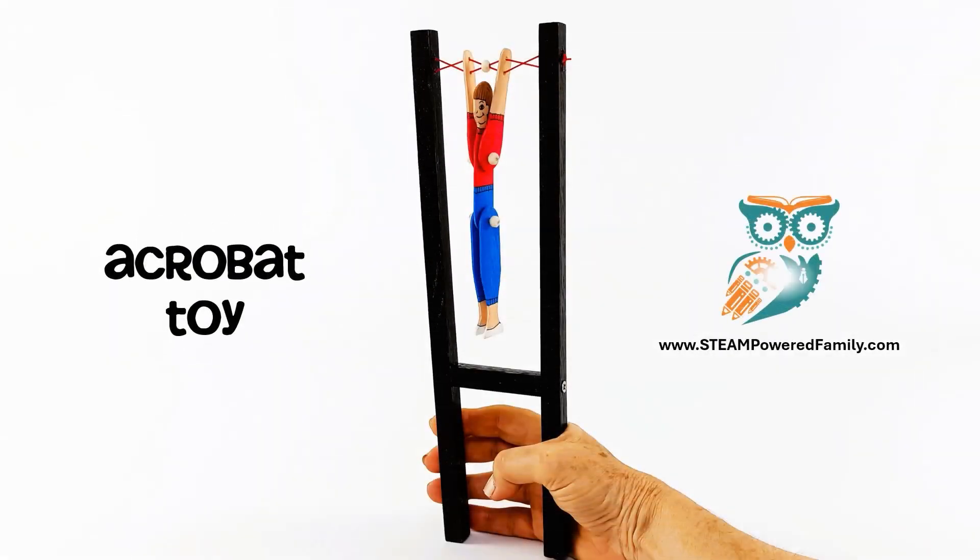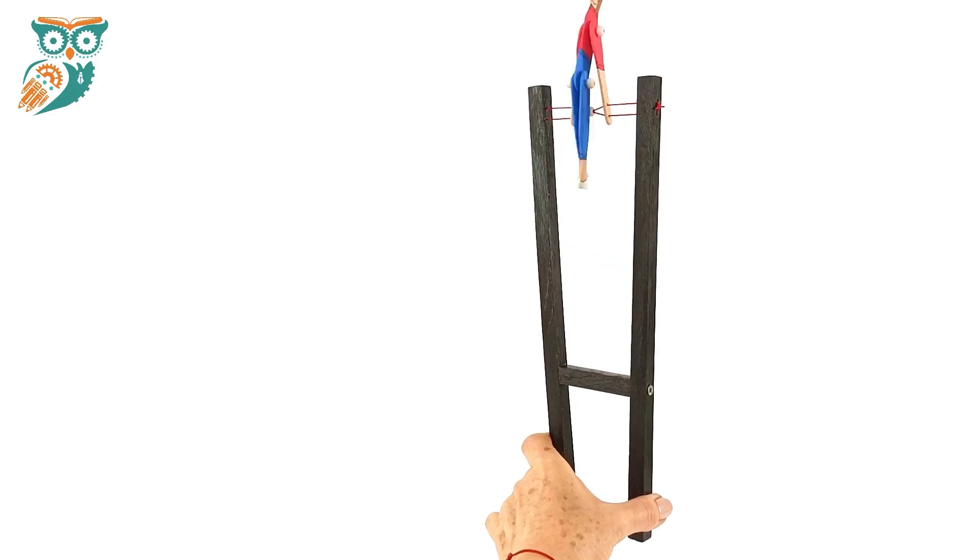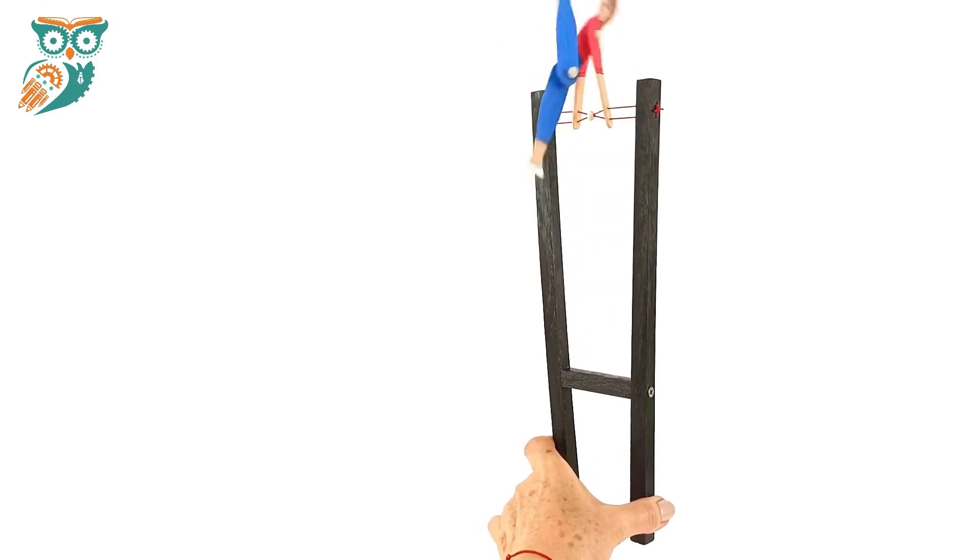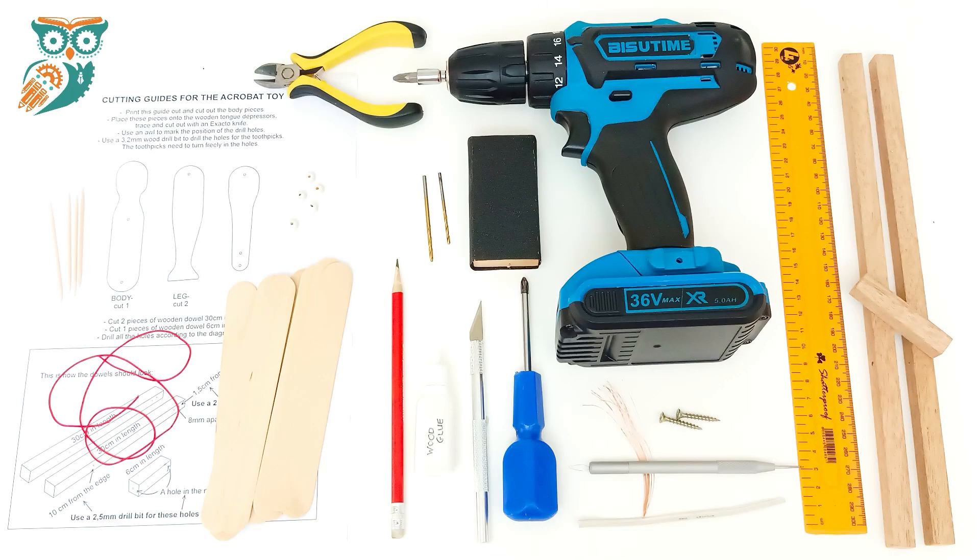Hi, welcome back to Steampowered Family. Today we're building a heritage toy or folk art toy, an acrobat. As you can see, when you squeeze the bottom of this toy, it'll dance and jump and do different tricks.